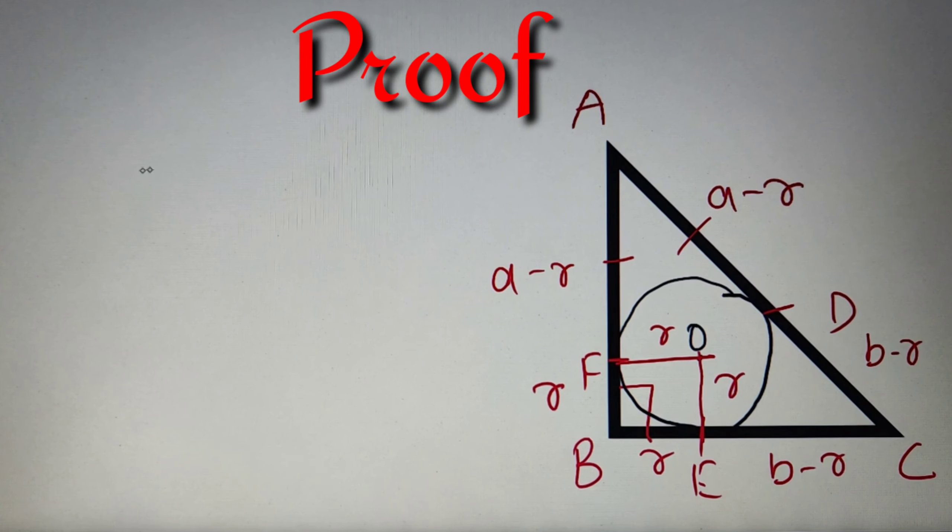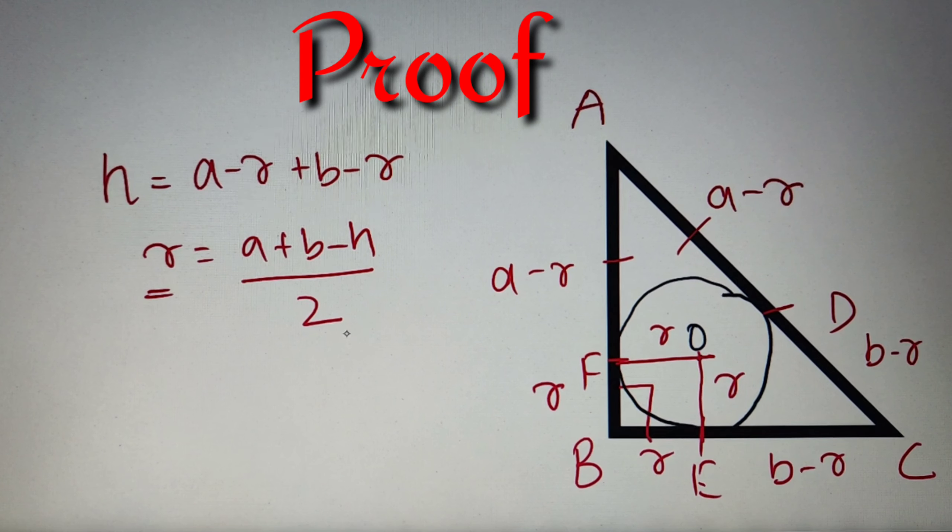Now we have taken the length of side AC as equal to small h which is also equal to a minus r plus b minus r. So from this I can say that r is equal to a plus b minus h whole divided by 2.